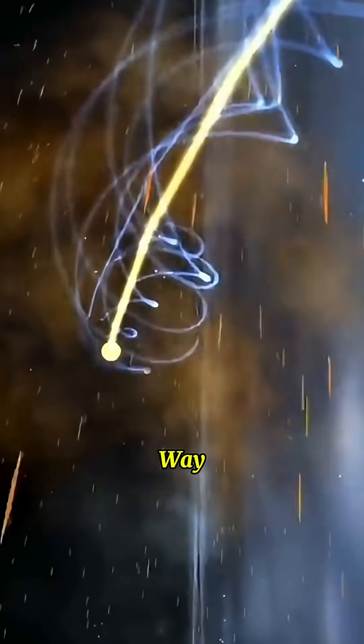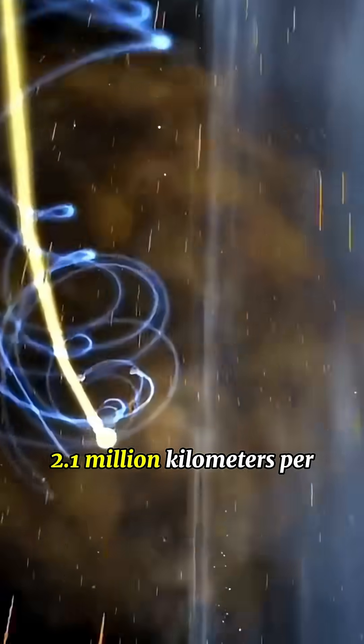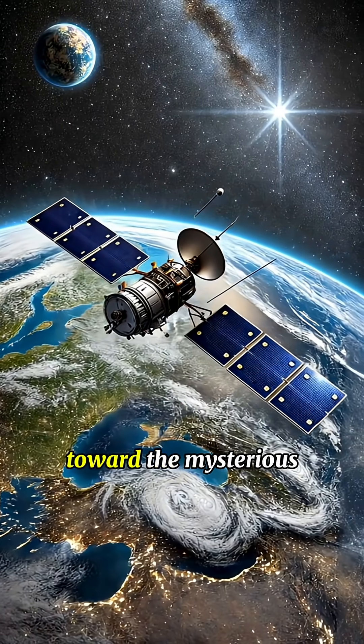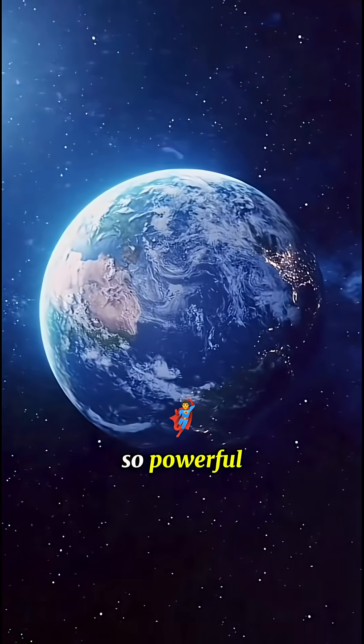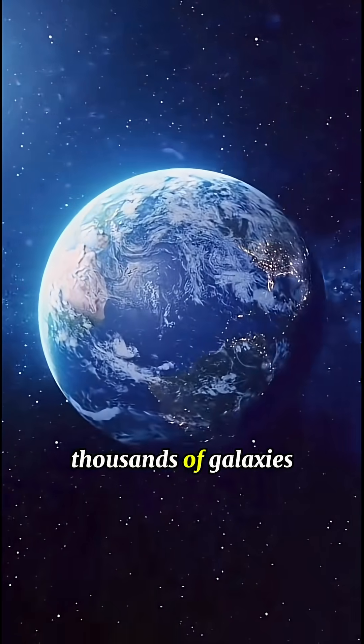The entire Milky Way is moving at 2.1 million kilometers per hour toward the mysterious Great Attractor, a gravitational anomaly so powerful that it's pulling thousands of galaxies toward it.